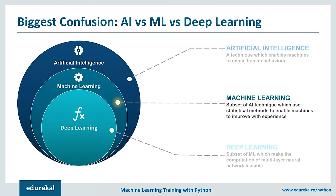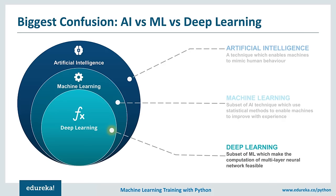Deep learning is a subset of machine learning where similar machine learning algorithms are used to train deep neural networks to achieve better accuracy in cases where traditional machine learning was not performing up to the mark. So AI, machine learning, and deep learning are all different — each is a subset of the previous.